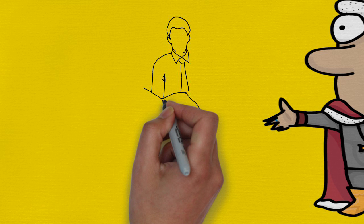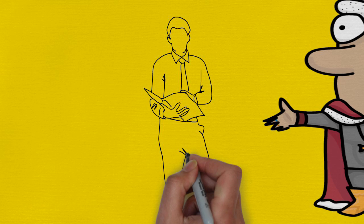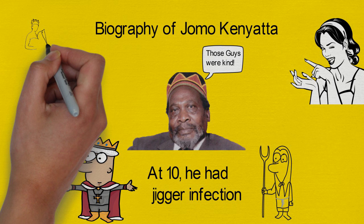He was baptized in August 1914. Afterwards, he left the mission life for that of a city in Nairobi. At Nairobi, he got a job as a clerk in the public works department. It was during that period that he adopted the name Kenyatta, a Kikuyu term for a particular fancy belt he had at that time. He later served in the High Court as an interpreter, and soon he was transferred to the Nairobi Town Council.